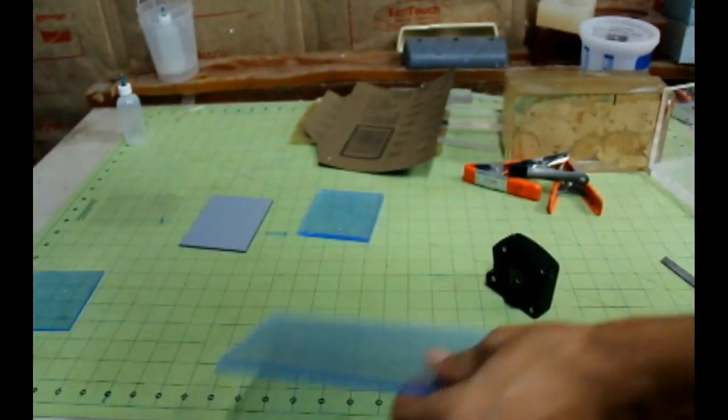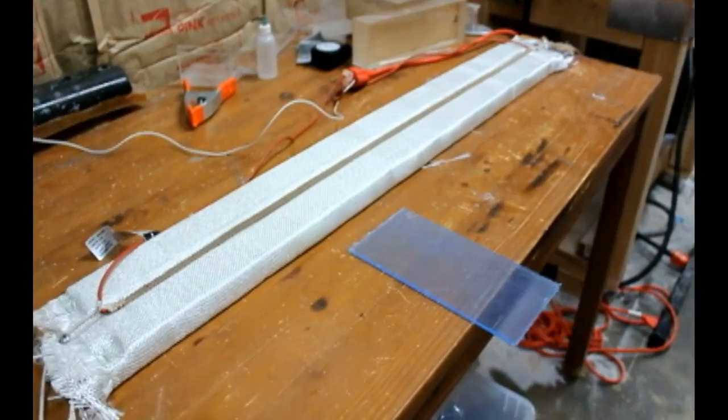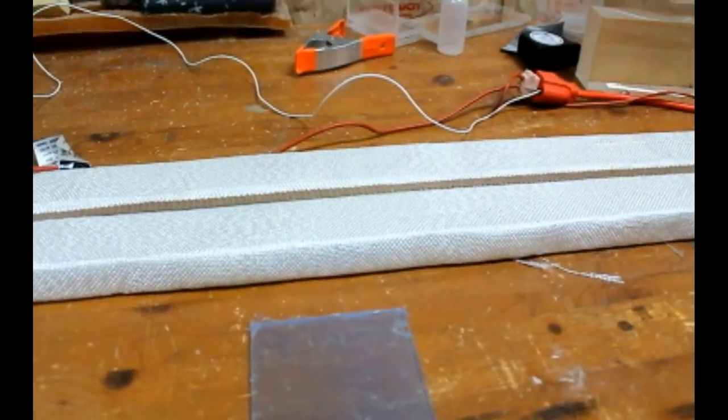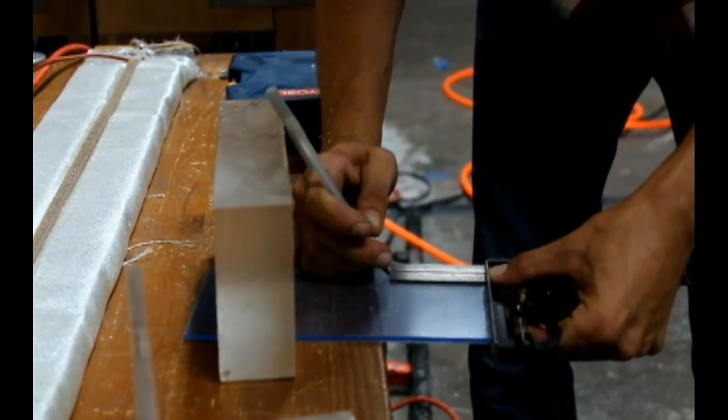We will now begin bending our main panel with this easy to set up heater strip purchased at our local plastic store. A video showing the setup and use of this tool can be found in the description below.